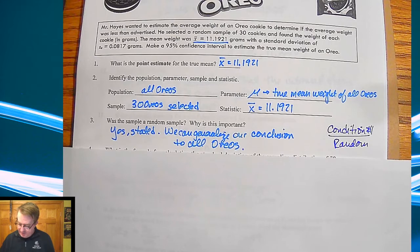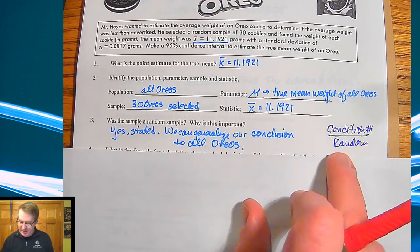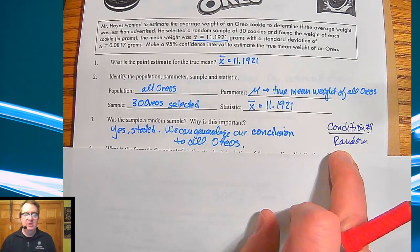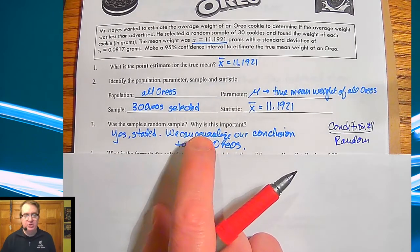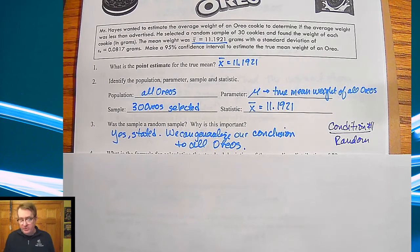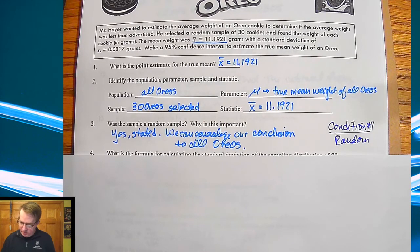So if we continue on first of all the first condition that we need is randomness and so we need to go through this and we need it because that will allow us to generalize our conclusion to all Oreos. So since I randomly picked 30 Oreos and we can assume that the Oreos that are put into the packages are also there randomly that should fit the formula for calculating the standard deviation of sampling distribution x bar.